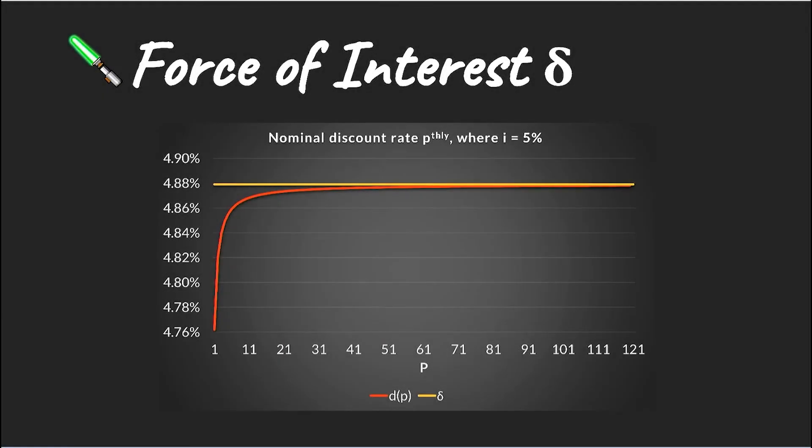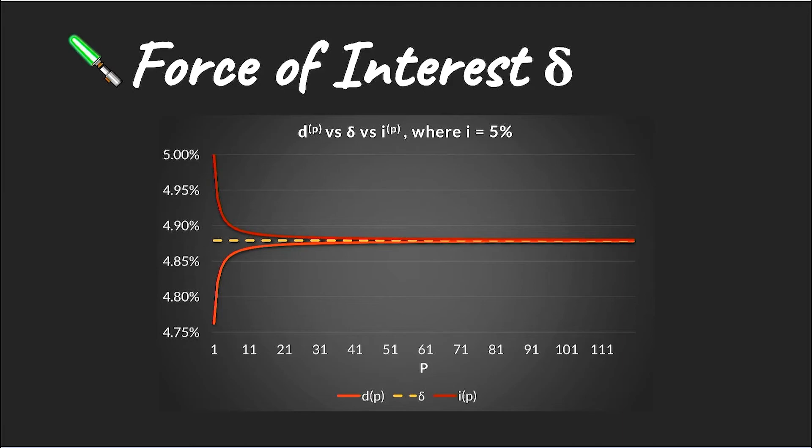And if we chart d_p for an increasing p, we can see that our discount rate converges again to the force of interest, this time from below.